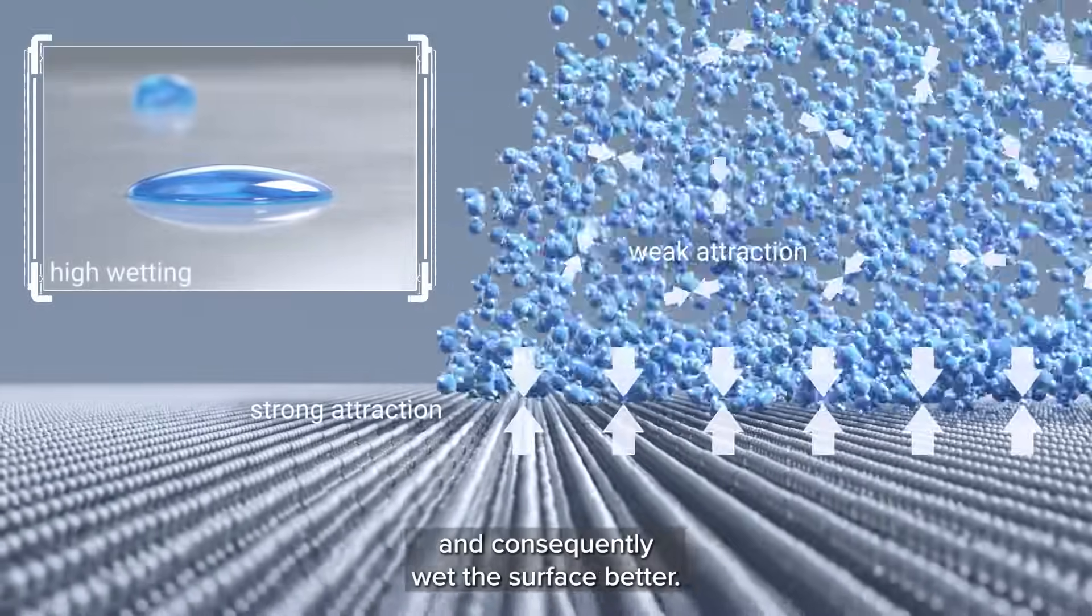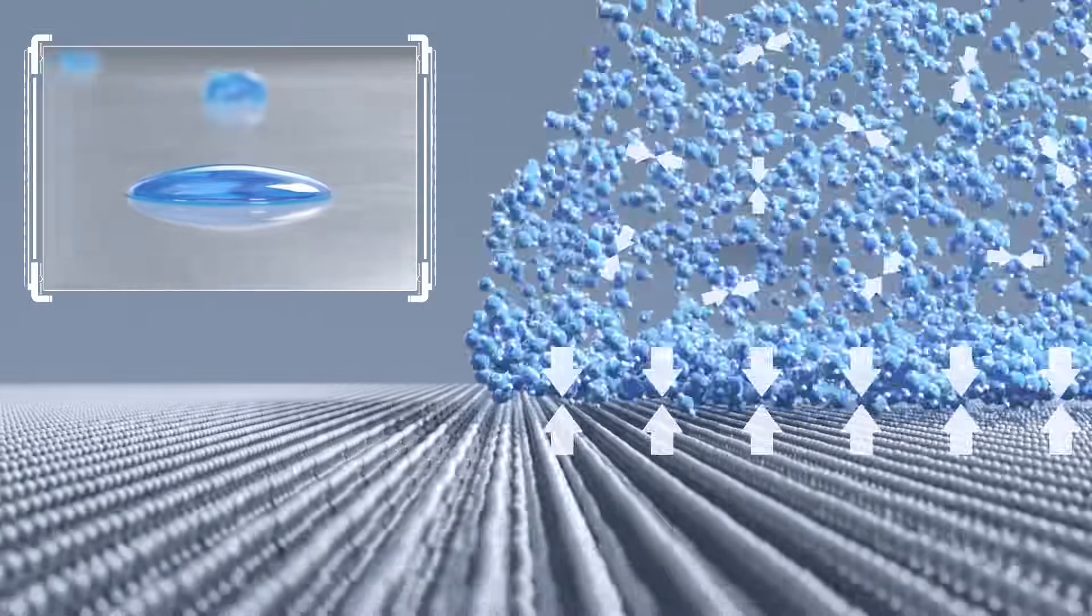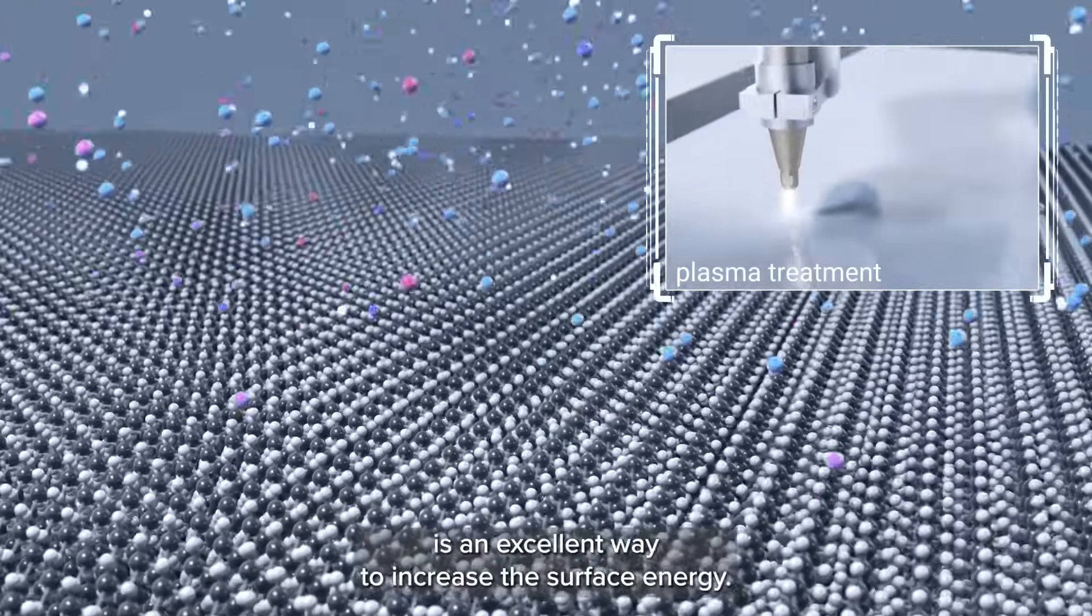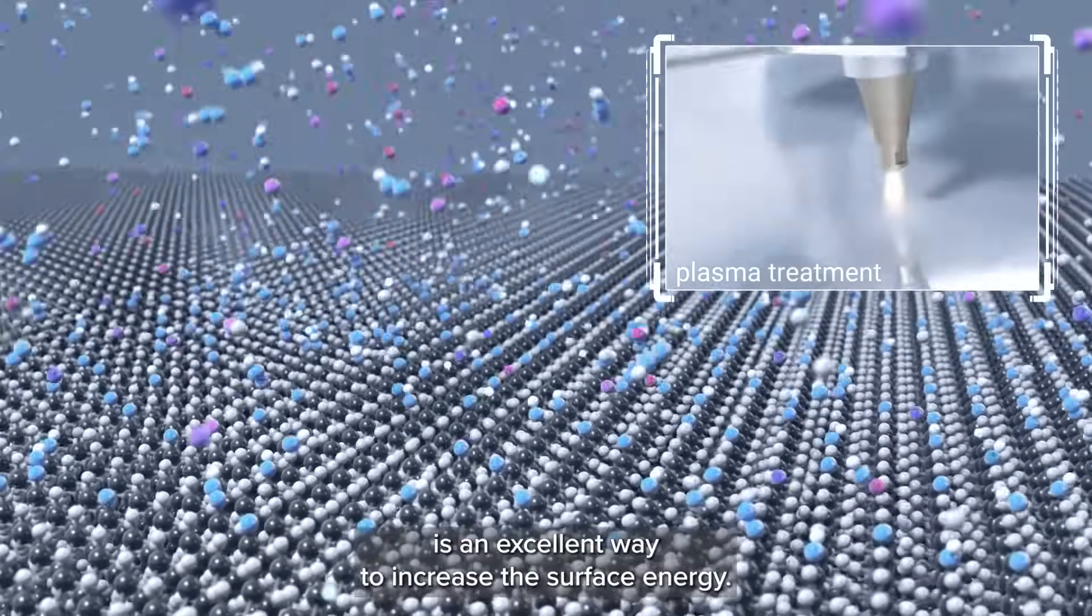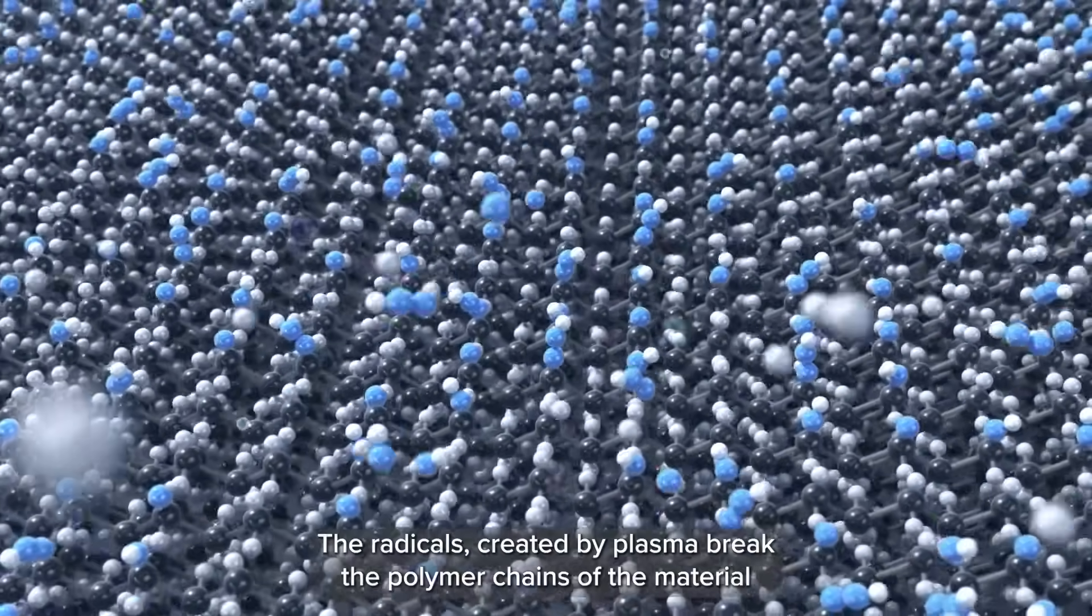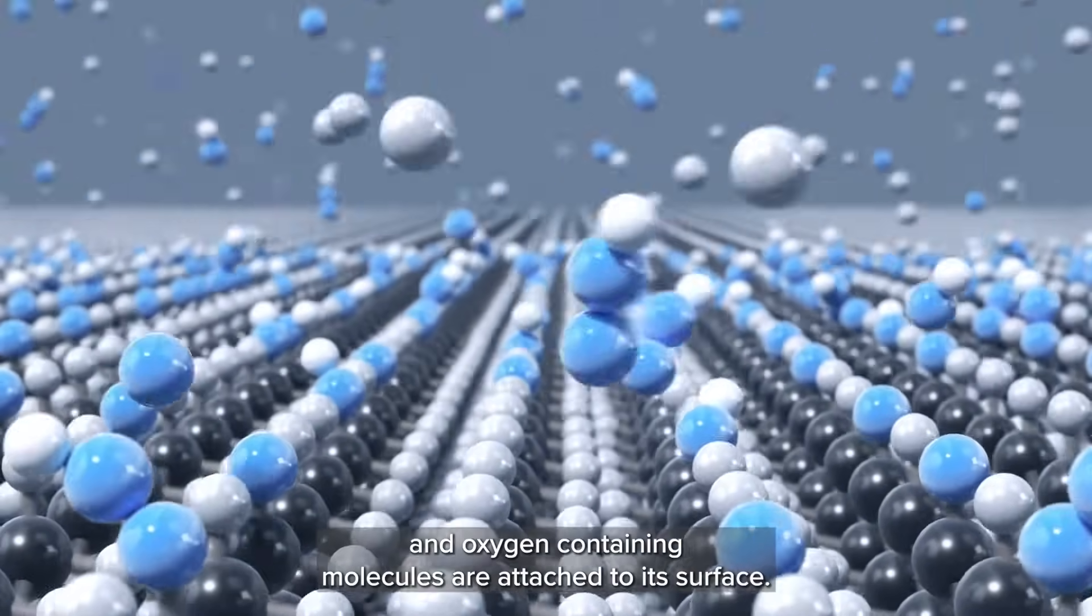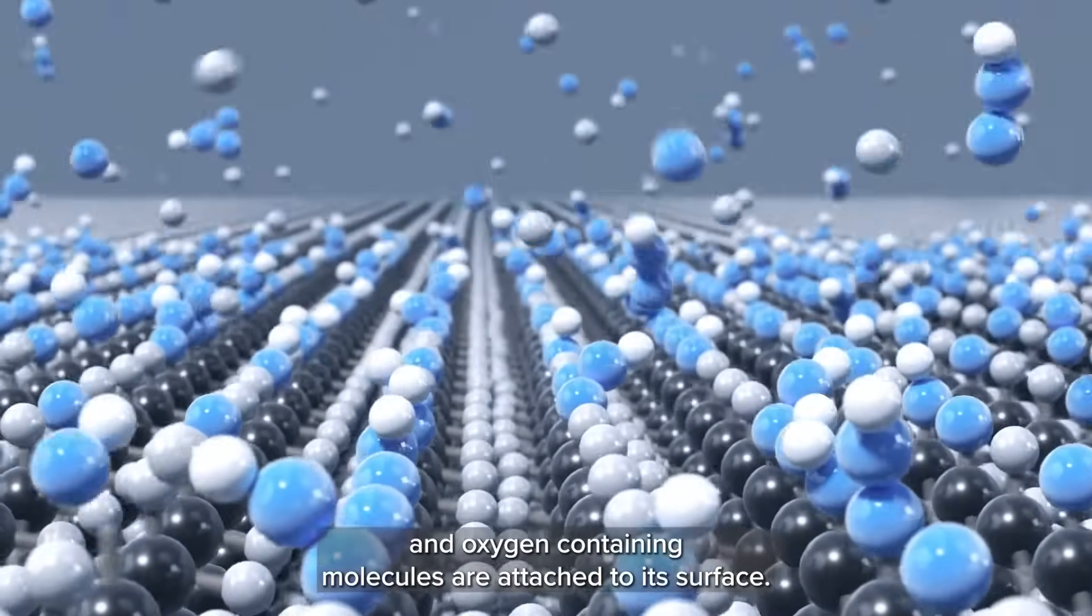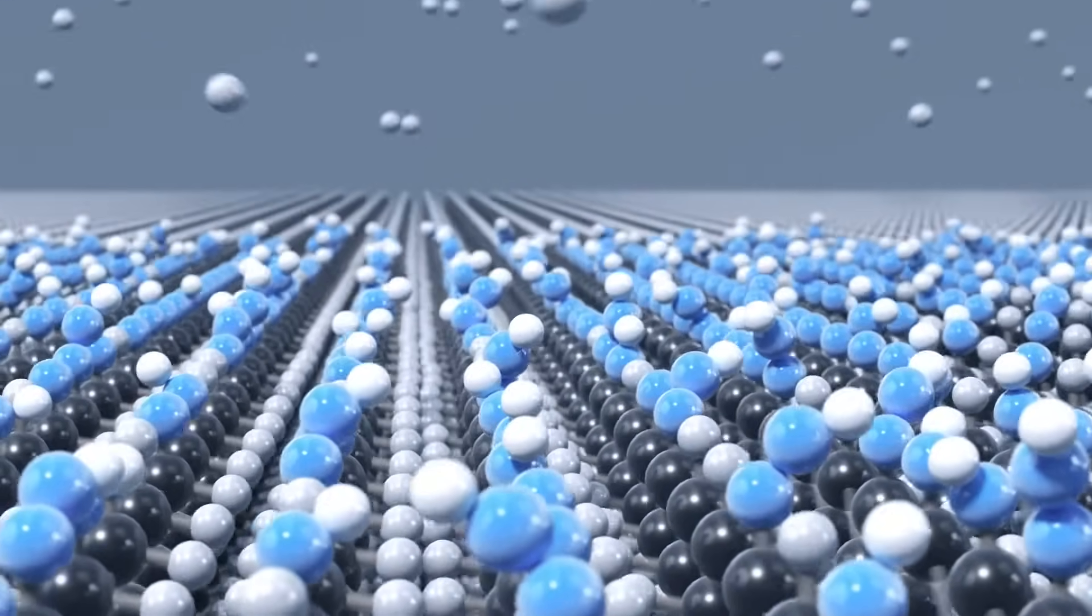Plasma treatment is an excellent way to increase the surface energy. The radicals created by plasma break the polymer chains of the material, and oxygen-containing molecules are attached to its surface.